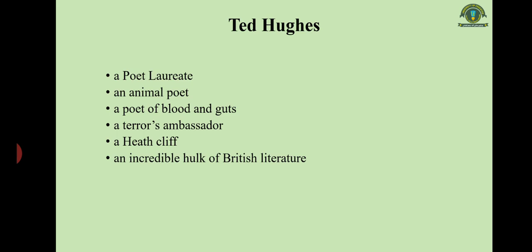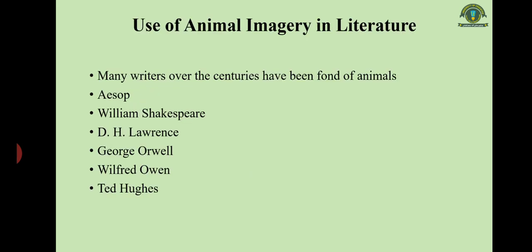Ted Hughes, as you know, was a Poet Laureate. He is most commonly and famously known as an animal poet. He is also called a poet of blood and guts, and because of his use of animal imagery he is called a terrorist ambassador. He is also called a Heathcliff.